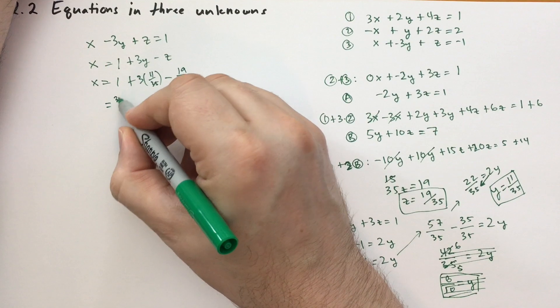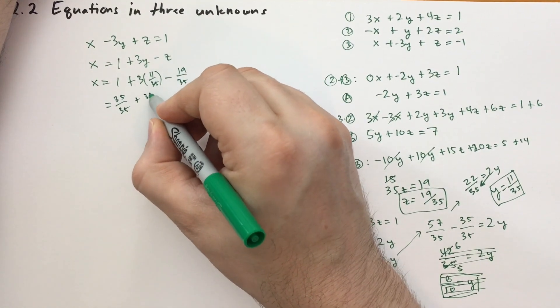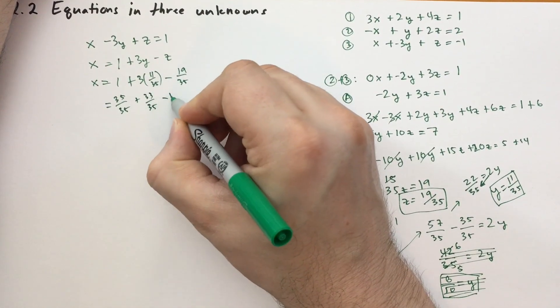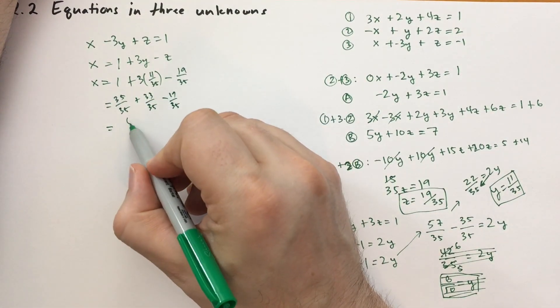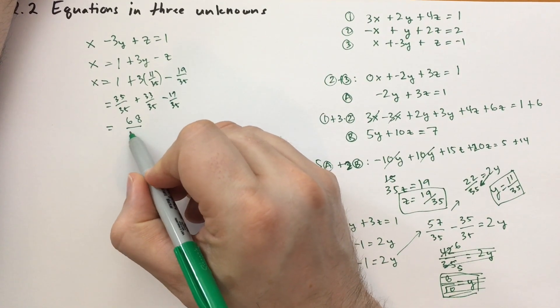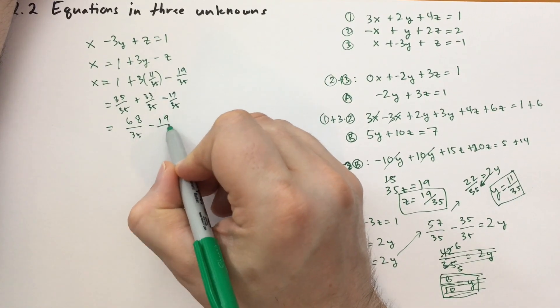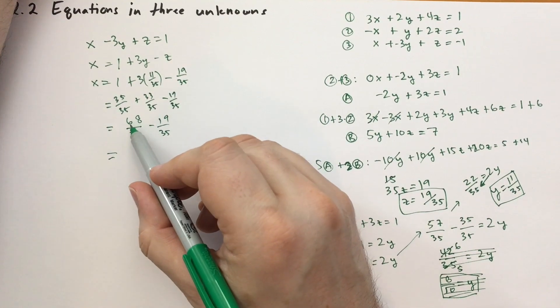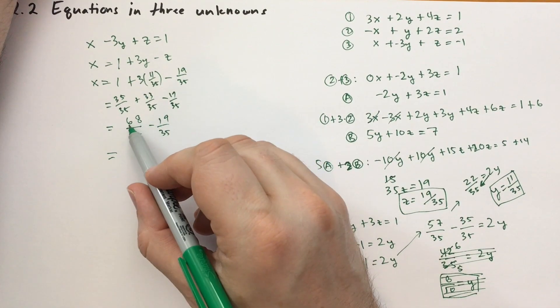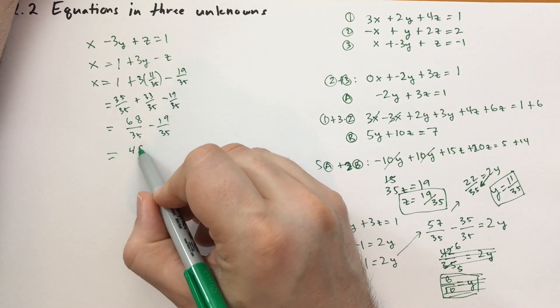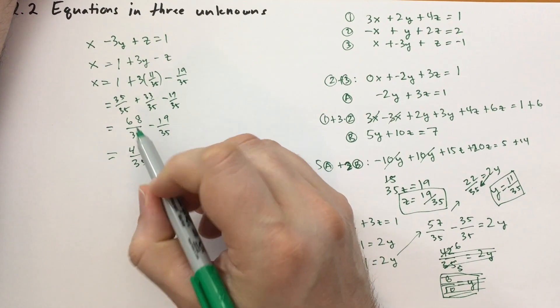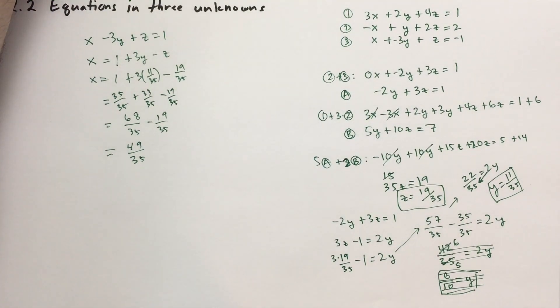So everything's in 35ths. Negative 35 over 35 plus 33 over 35 minus 19 over 35. And I would break out a calculator right now, but I don't have one on me, so let's just do it in my head. 68 over 35 minus 19 over 35. So 19 is almost 20. You just need to have another one. So if it was 20, it'd be 48, but it's not 20, so we need to have 49 over 35. 49, I think it's prime actually. Yeah, I think 49 is prime.